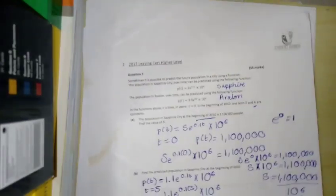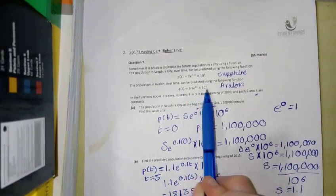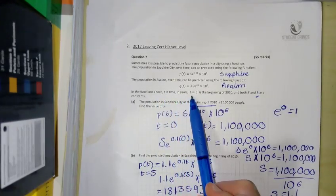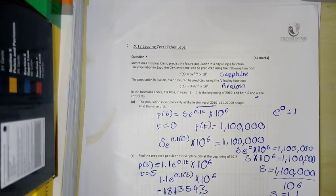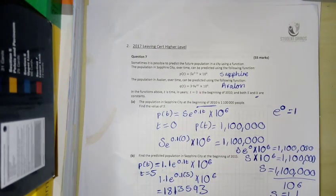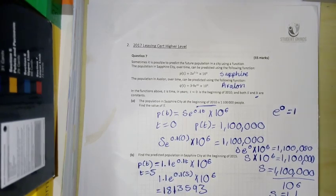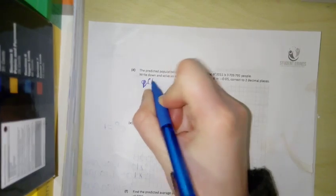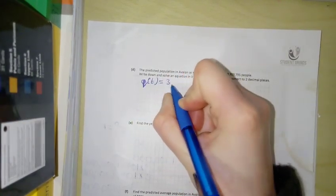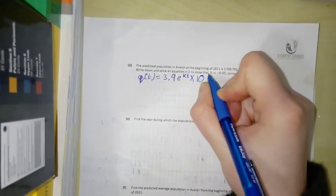So I'm going to go back to my original. The population in Avalon was given by this. In years, so in the functions above, T is time and T equals 0 is the beginning of 2010. So our function is Q(T) equals 3.9e^(KT) by 10 to the power of 6.